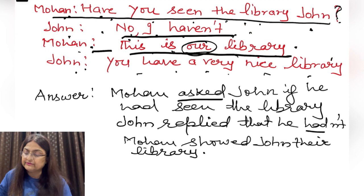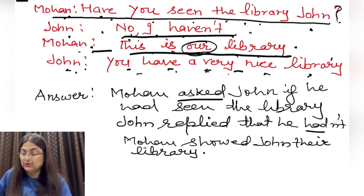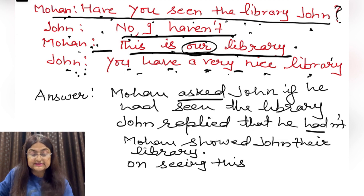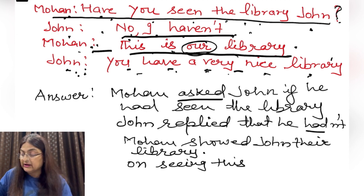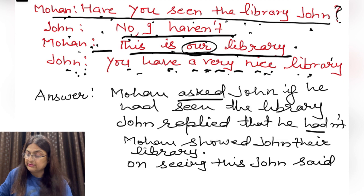Now the last sentence — John said 'You have a very nice library' when Mohan showed him the library. On seeing this, John said that it was a very nice library. Who replied? John replied. On seeing this, John said that...